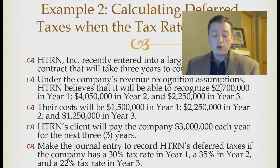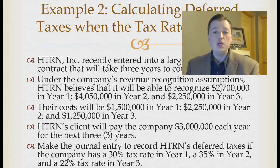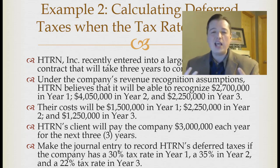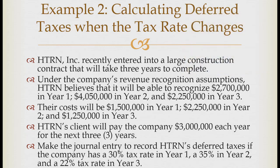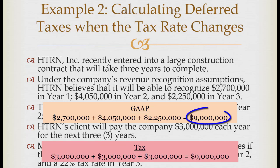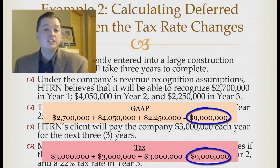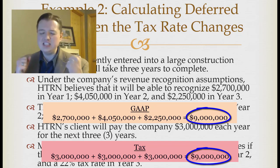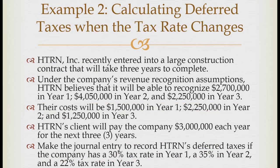Before jumping into calculations, we need to determine whether this is a permanent or temporary difference. A permanent difference means values reported under GAAP and tax differ permanently; a temporary difference means the same total amount is recognized, just at different times. Adding up GAAP revenues: 2.7 + 4.05 + 2.25 = 9 million. Tax revenues: 3 million per year × 3 years = 9 million. The totals match — so this is a temporary difference, which means deferred taxes apply.